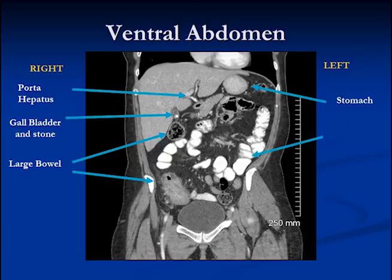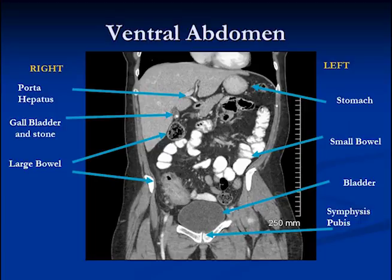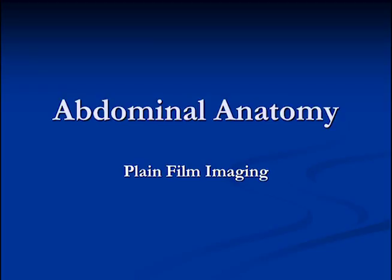So that's large bowel there. We have the small bowel which contains contrast media, and finally below we have the bladder. All these structures are easily seen on these coronal images. This is the symphysis pubis and the femoral artery, right in front of the hip joint within the muscles.